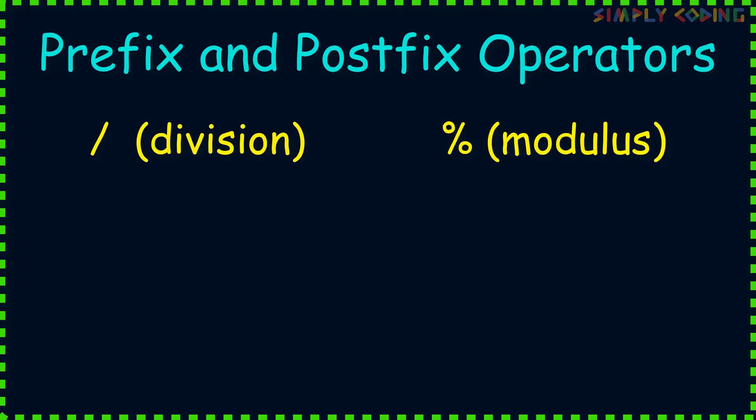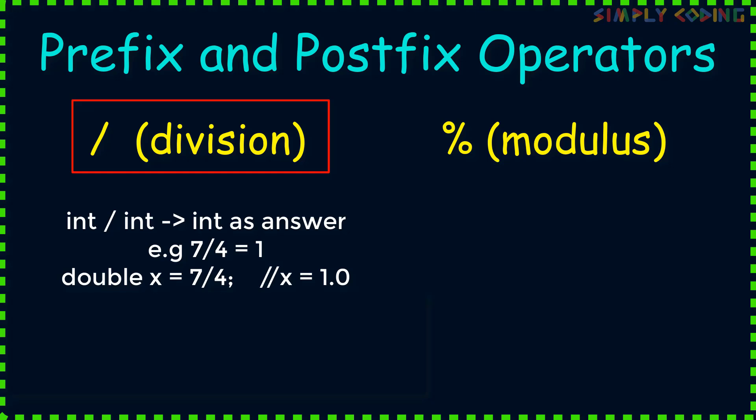Next, I am quickly covering how to use a couple of operators like division and modulus. If a division operator has both int value as numerator and denominator, it will return only int value. Like in this example, even if we assign it to double, the calculation first happens as int only and then it is just converted to double. So we still lose the decimal value.